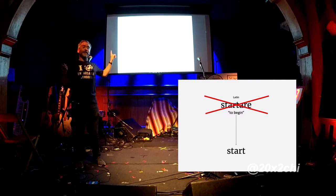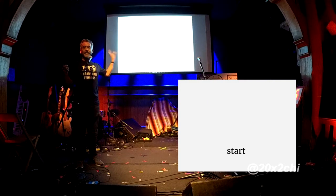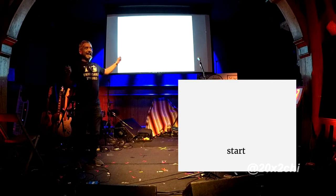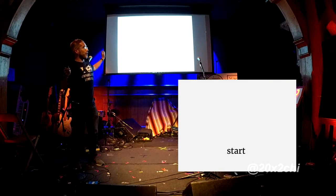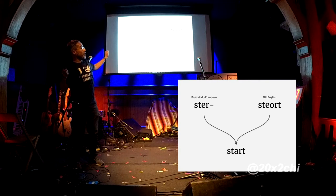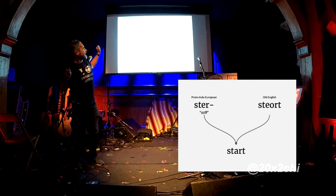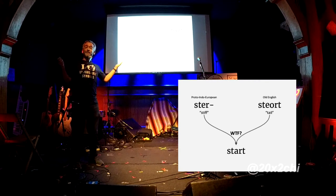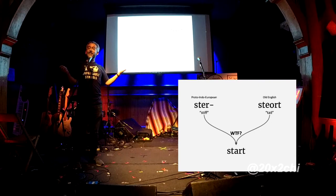When the first dictionary I looked at cited where "start" comes from, it cited two origins: the Proto-Indo-European root "stir" and Old English "stiort," which mean "stiff" and "tail." So — WTF — how do we go from "stiff" and "tail" to "start"?